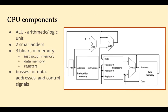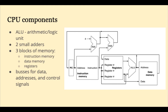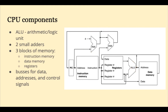What you see is a conceptual diagram of what's going on inside a MIPS CPU. The major component is the ALU, the Arithmetic Logic Unit. There are also two smaller ALUs which are simply adders. There are three blocks of memory: a block of memory for instructions, a block of memory for data, and our register file. All of the connecting lines are buses for data, addresses, and control signals.